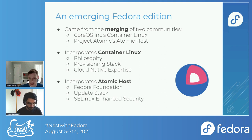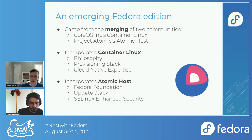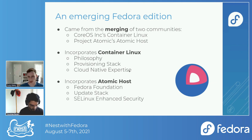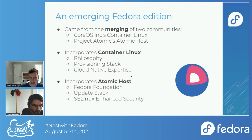From those two separate projects we picked and chose what we wanted to keep from both. From Container Linux we kept the philosophy, the provisioning stack, and the cloud-native expertise. From Atomic Host we kept the Fedora foundation, the update stack RPM-OSTree, and enhanced security with SELinux, which was not enabled in Container Linux.